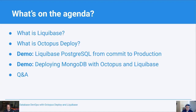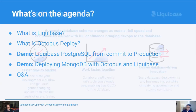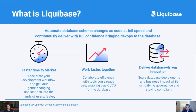What you can ask for is a webinar on database DevOps. Liquibase is a database release automation tool that helps you automate your database schemas as code at full speed, helping you continuously deliver with confidence, bringing data DevOps to your database. We take your database changes all the way from ideation through to production at a much faster time frame with guardrails. We help you work faster as a team using CI/CD tools like Octopus and Liquibase, and deploy those changes at scale — build once, deploy many.